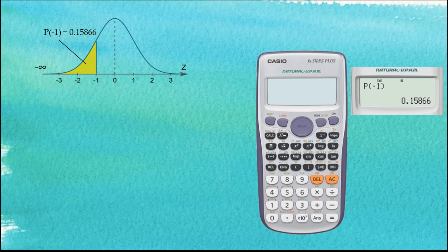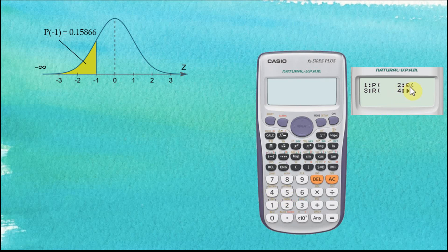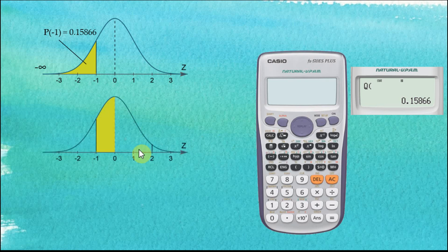Let's see another case. We go to Shift, Statistic, Distributions again. This time let's try Q — choose number 2. Q is used to find the area between any number and 0. So let's say we would like to find the area from negative 1 to 0.